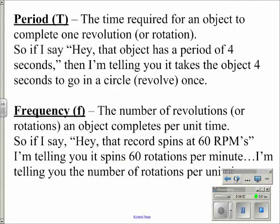Two other super important definitions — these are colossally important. The first term is what's called period. Capital letter T is the symbol for period, because period is a measure of time. Specifically, it measures the amount of time required for an object to complete one revolution or one rotation. So if an object has a period of four seconds, it takes the object four seconds to go around in a circle.